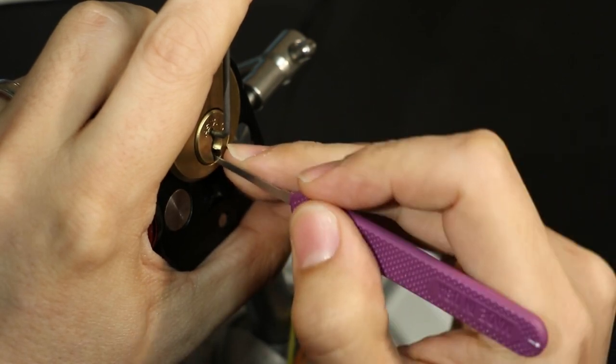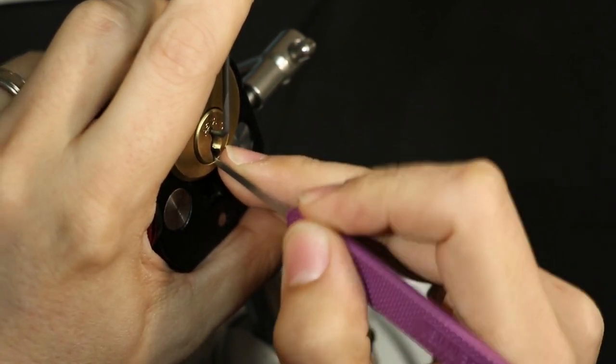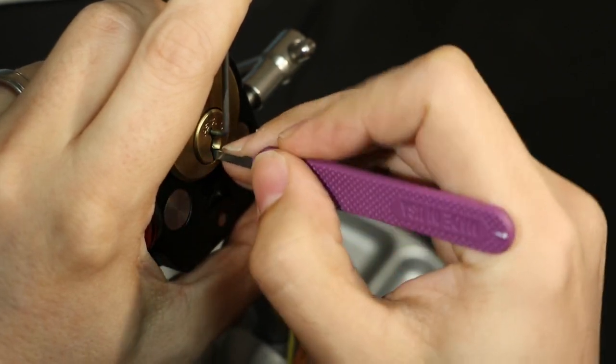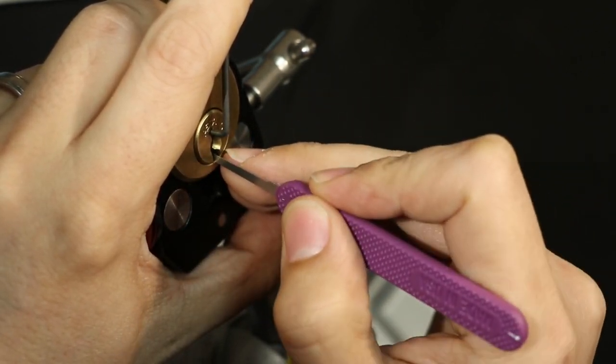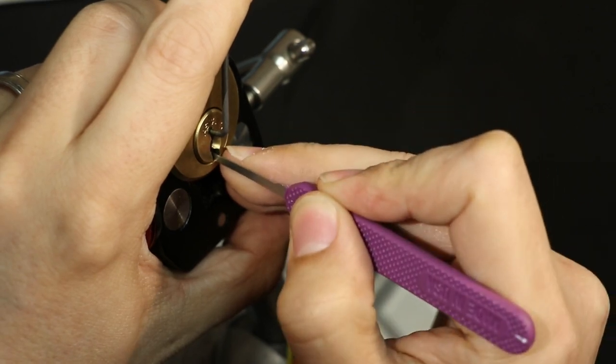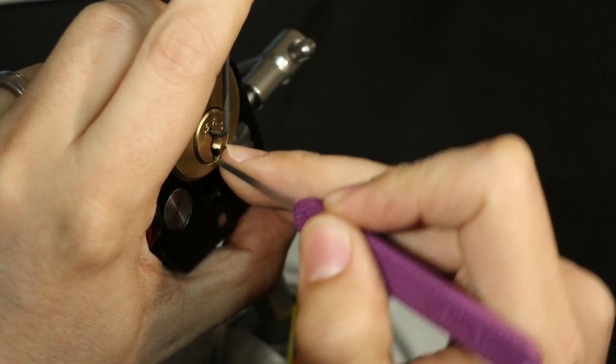For the first part, I won't go into too much detail. You're basically feeling for a binding pin and just pushing it up. Your goal here is to get either the gin set or into the counter milling so that you get a false set.